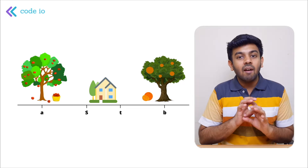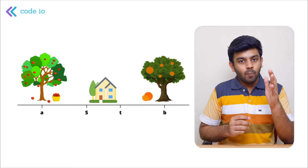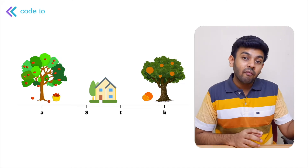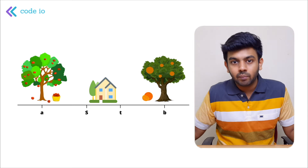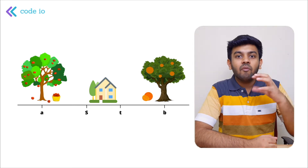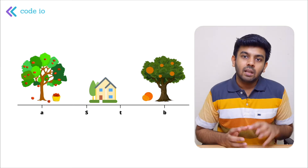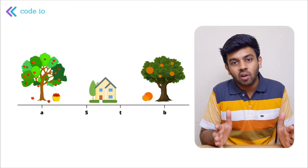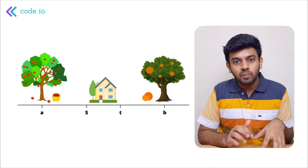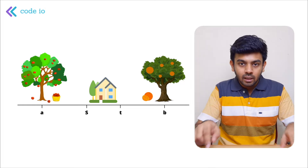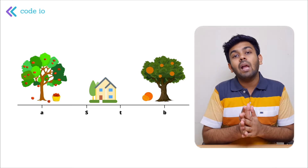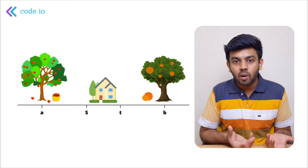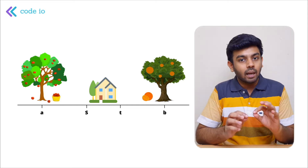So far we have four coordinates: the boundary of your house — the S value and the T value, the starting and ending point — and A and B for the trees. The fruits that fall from these trees might fall in your house's area, so you'll have to calculate and print the number of apples and oranges that fall into your house.